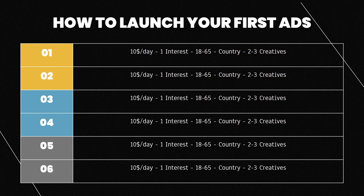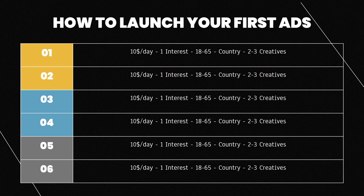If the product sells more to 50-year-olds, Facebook is going to stop spending on 20, 30, and 40-year-olds. Same with countries — if you have five countries and it starts selling a lot in Australia, Facebook is going to stop spending on the United States, UK, Canada, and New Zealand. You don't really have to narrow down. The second you start narrowing down your ads, you're messing up the optimization.